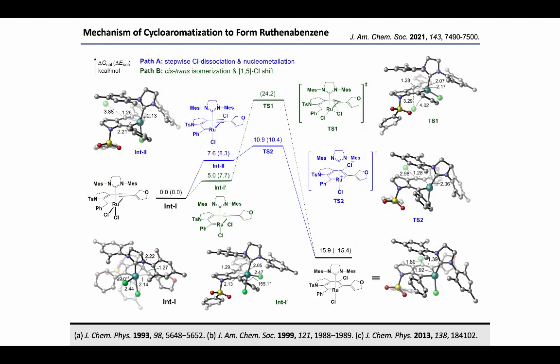Next, mechanisms for the cycloaromatization step to form ruthenobenzene were investigated. Two pathways are possible. Path A involves chlorine dissociation leading to intermediate 2, which involves alkyne chelation with a cationic ruthenium species. This intermediate can undergo nucleophilic metalation quite efficiently, leading directly to ruthenobenzene via transition state 2, with an energy barrier of 10.9 kcal/mol. In Path B, a cis-trans isomerization places the chlorine at the trans position, elongating the Ru–Cl bond due to the trans effect of the NHC ligand. This intermediate 1' can undergo a 1,5-chlorine shift, but the energy barrier is exceptionally high at around 24.2 kcal/mol, also reflected in the exceptionally long Ru–Cl bond lengths seen in the 3D figure of transition state 1.